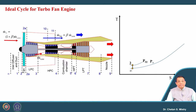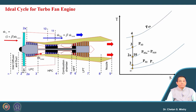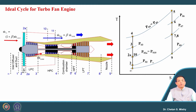There is a specific reason behind selecting the ideal cycle — you will realize it very soon. Process infinity to 2 represents the intake. From 2 onward, this represents the compression work in the fan. Then 3 to 4 represents the LP compression process, 4 to 5 represents the HP compression process, and 4 to 5 represents the heat addition process. Process 5 to 6 represents HP turbine work, 6 to 7 represents LP turbine work, and 5 to 9 or 7 to 9 represents the exhaust configuration.